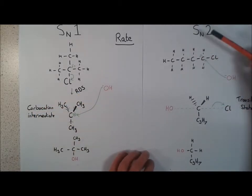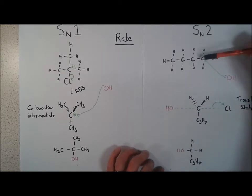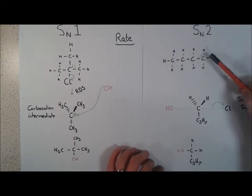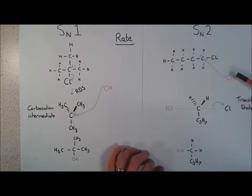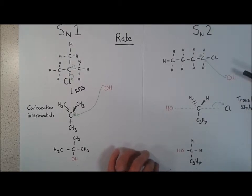Over with SN2, we're going to have two molecules involved in the rate determining step. This is because the OH- can attack directly to the carbon. We don't have to wait for the chlorine to fall off. So if we increase the concentration of OH-, more of them can attack the halogenoalkane. If we increase the concentration of the halogenoalkane, more can be attacked by the OH-.